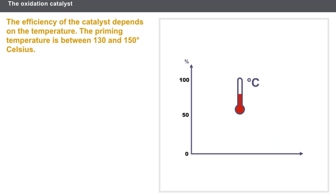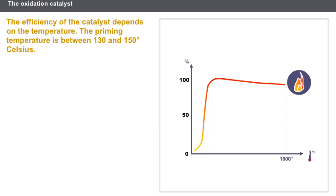The efficiency of the catalyst depends on the temperature. The catalyst only becomes efficient from a certain gas temperature, known as the priming temperature. However, over 1000 degrees Celsius, the ceramic material is destroyed. The priming temperature is between 130 and 150 degrees Celsius.